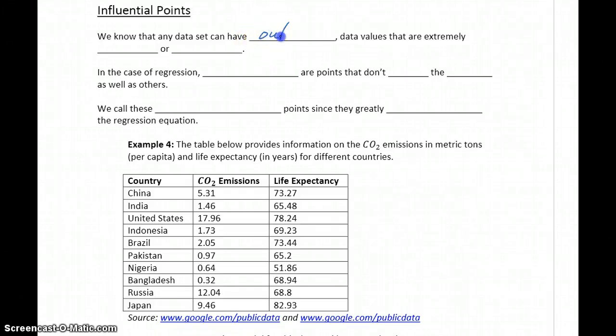We know that any data set can have outliers, which if we're talking about just a single data set, we're talking about values that are extremely large or extremely small relative to the rest of the data.